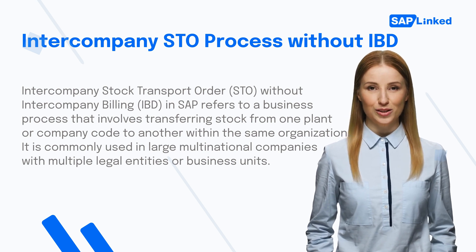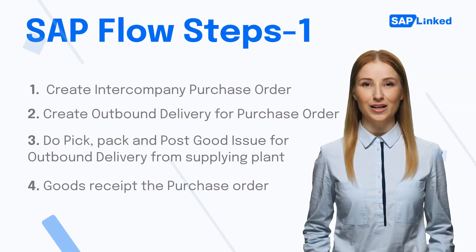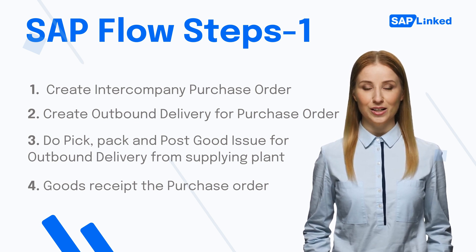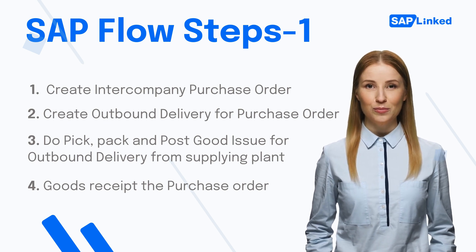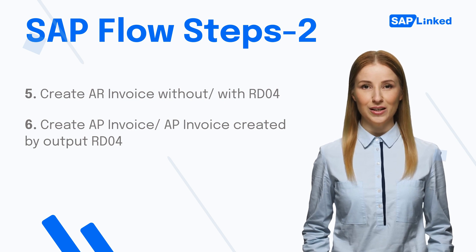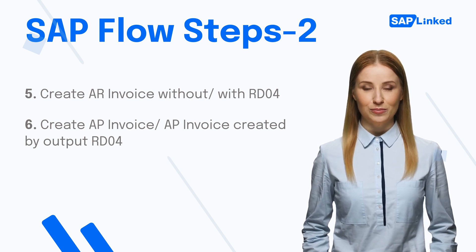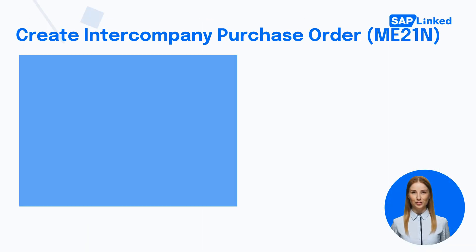Let's look into each of the flow steps for the intercompany STO process. Flow steps for intercompany STO with inbound delivery are: 1. Create intercompany purchase order. 2. Create outbound delivery for purchase order. 3. Do pick, pack, and post goods issue for outbound delivery from supplying plant. 4. Goods receipt the purchase order. 5. Create AR invoice with or without RD04. 6. Create AP invoice, or AP invoice created by output RD04.